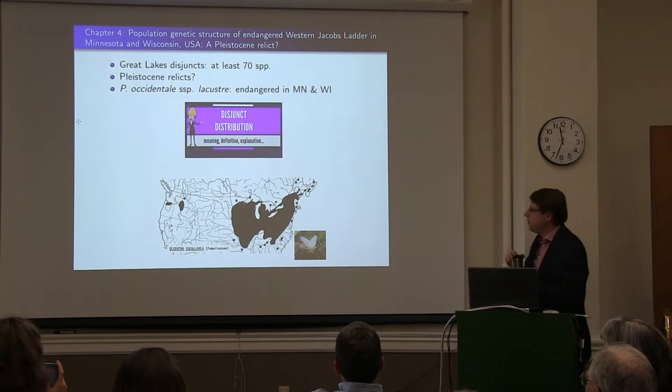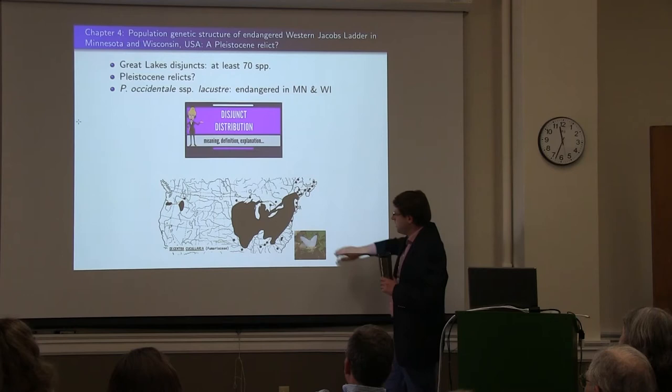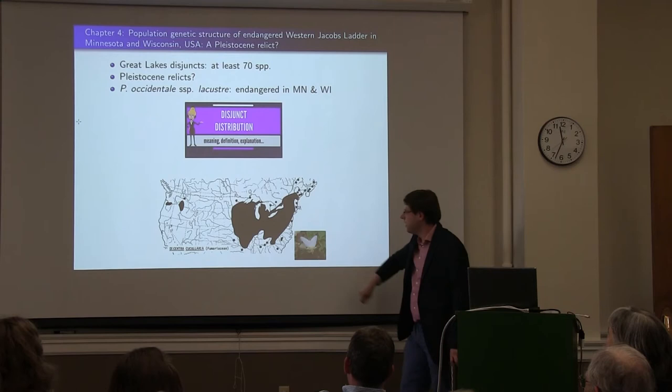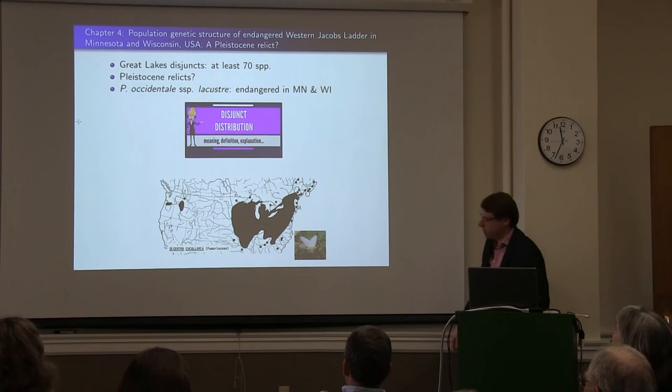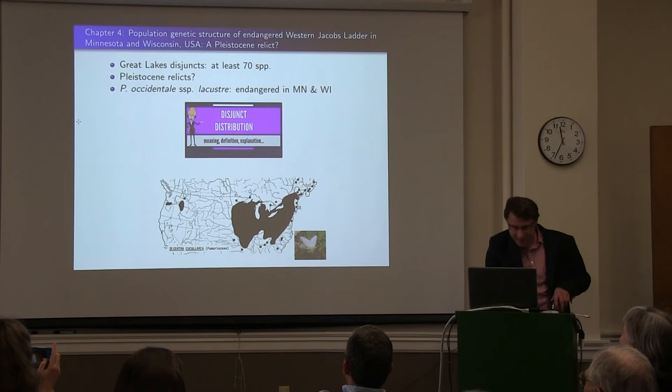The last chapter looks at the population genetic structure of an endangered subspecies from western North America that is disjunct in the Great Lakes. This is just an example of disjunct distribution — widely separated populations of a species. The Great Lakes disjunct is found in eastern North America, with a lot of empty space in between, and then it pops up in western North America. Apparently there's a YouTube video about this.